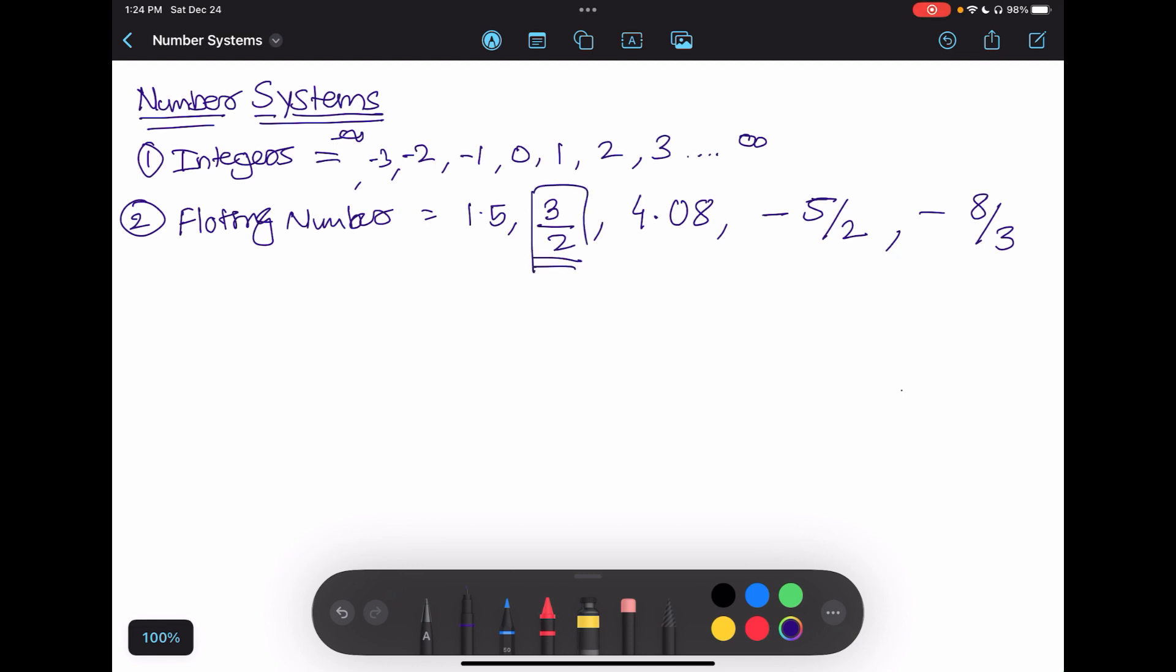Any such numbers we can call floating numbers because they are floating on each other, or they are like fractions. Negative and positive, we are not worried about that.